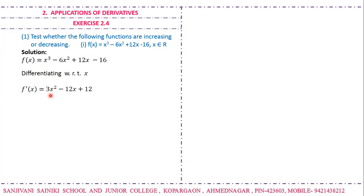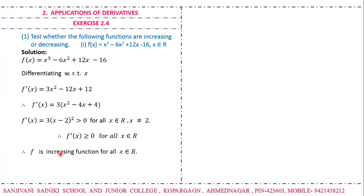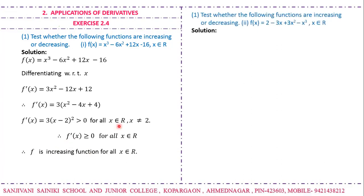The derivative is 3x² - 12x + 12. Taking 3 common, we get x² - 4x + 4, which is a perfect square: (x - 2)². For any real number, (x - 2)² is always greater than or equal to zero, and equals zero when x = 2. So f'(x) ≥ 0 for all x ∈ ℝ, and hence the function is increasing for all x ∈ ℝ.